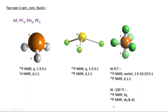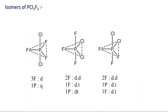Now consider the isomers of PCl2F3. There are three possible isomers: when the two chlorines are in axial positions, when they are in equatorial positions, and when one is axial and one is equatorial. In the first isomer, chlorine atoms are NMR inactive, while fluorine and phosphorus are NMR active. For the three equatorial fluorines we get a doublet, and for one phosphorus we get a quartet.